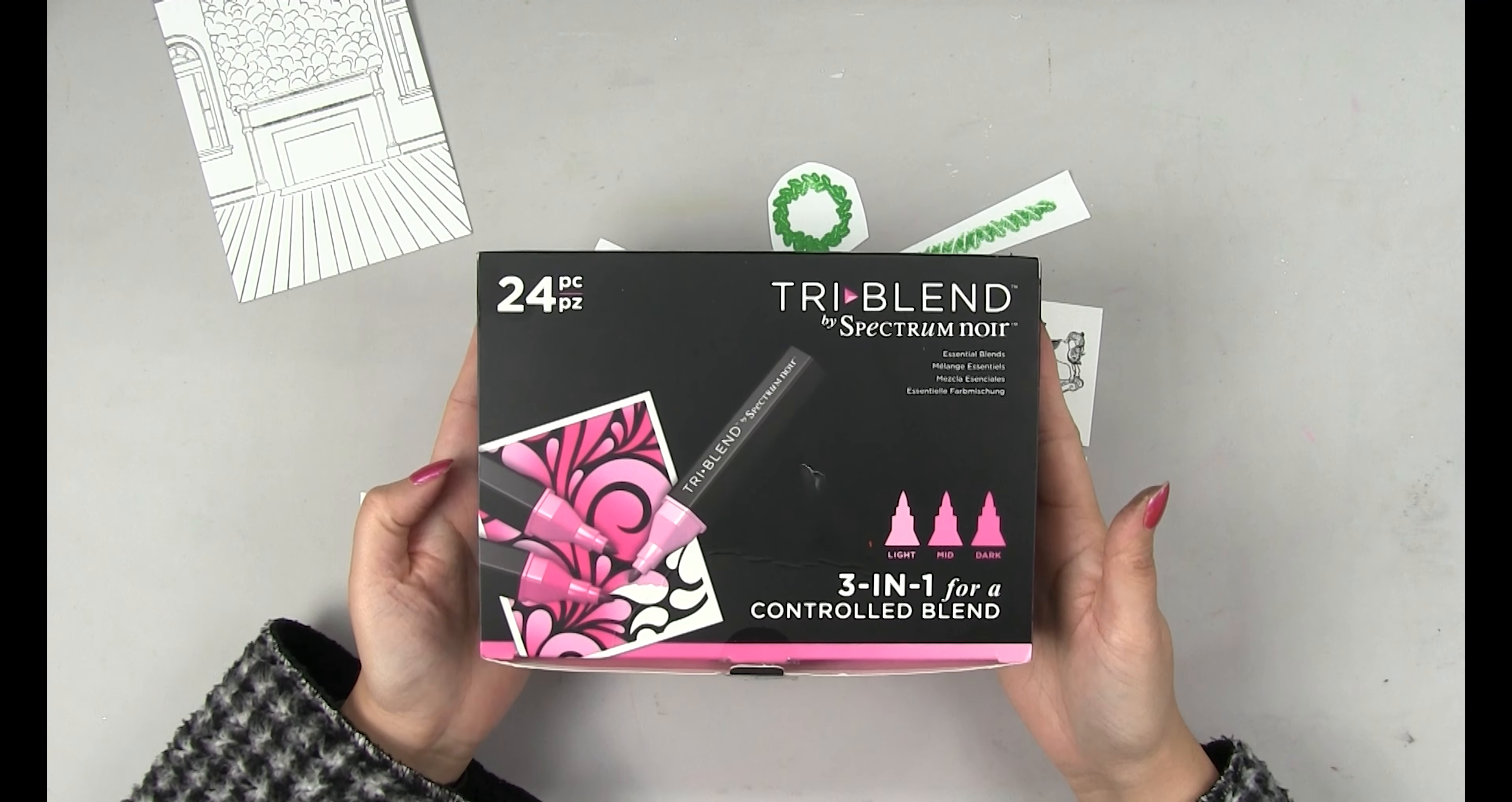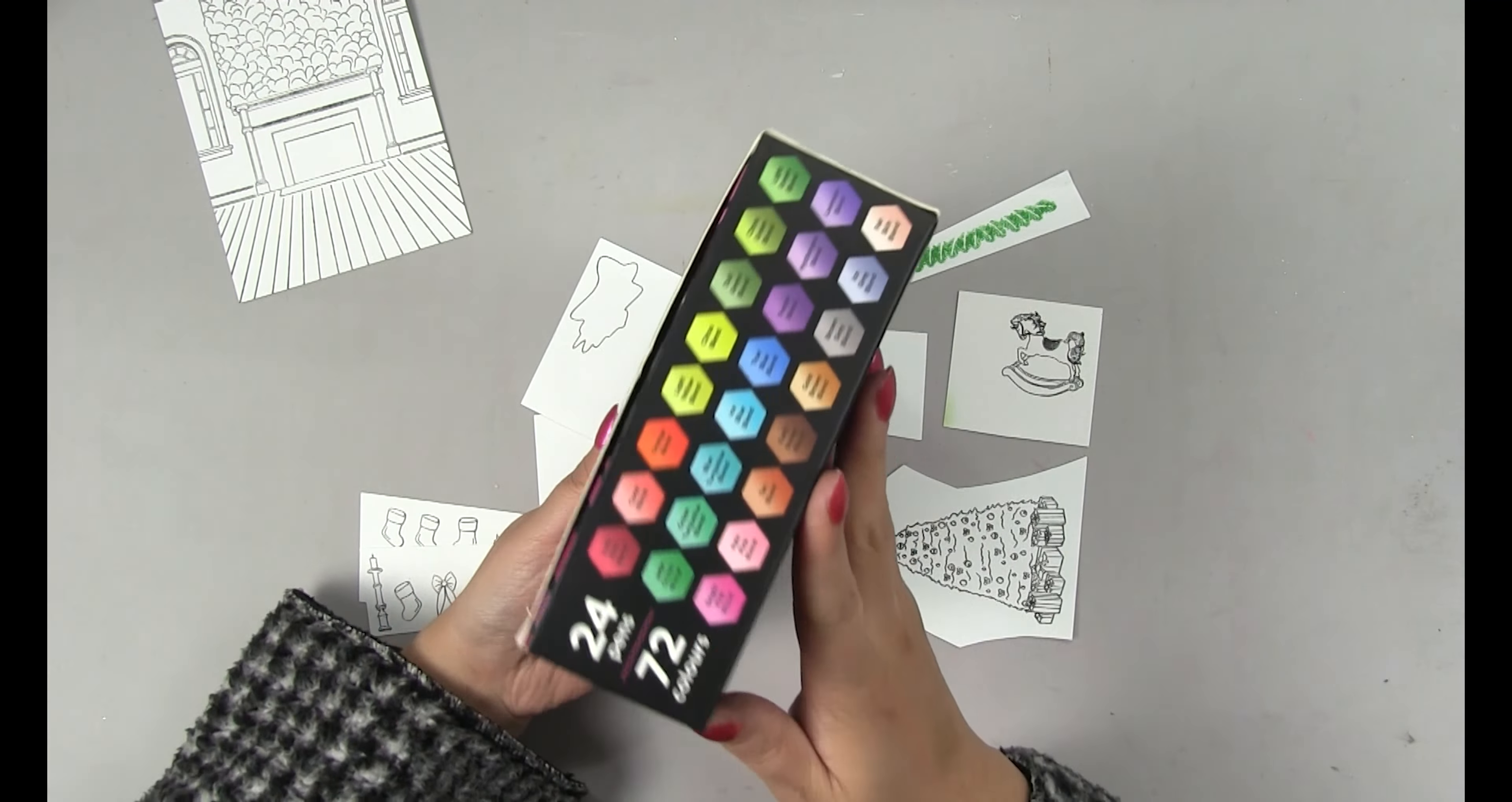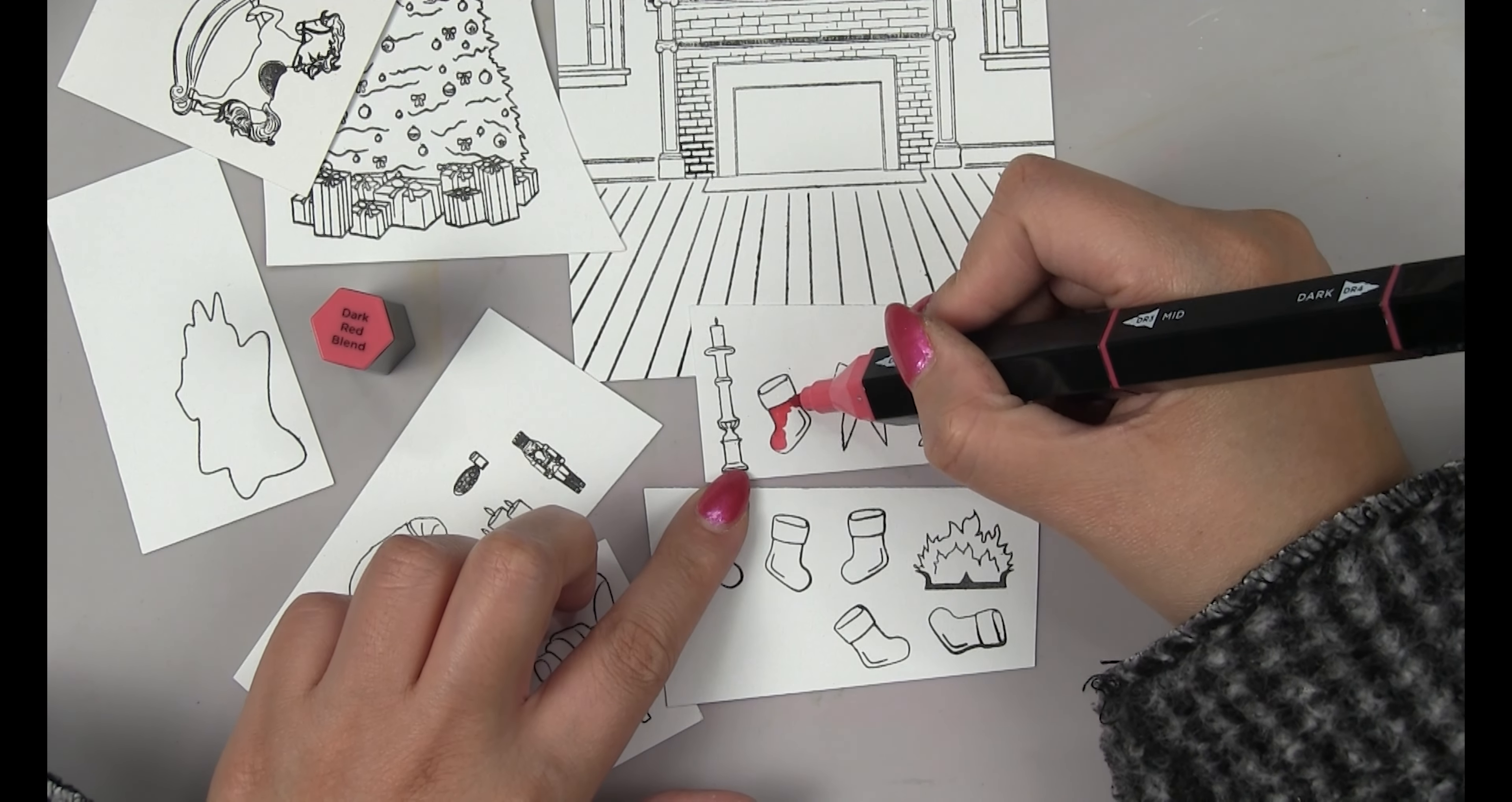We're using Spectrum Noir's tri-blend alcohol ink markers. I love these because you have all three shades of one color on the one marker. I placed the cap on screen so that you guys can see exactly which marker I'm using.